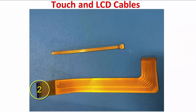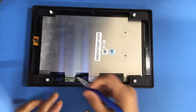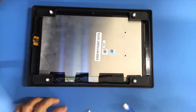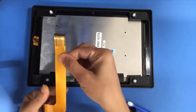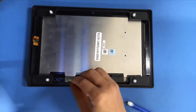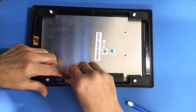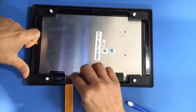Next, connect the LCD cable end shown to the LCD panel. Find the LCD connector on the LCD panel as shown here. Lift up the white flap of the LCD connector on the LCD panel. Insert the LCD cable into the black side of the connector as shown. Be sure that the cable contact is facing down towards the LCD panel. Once the cable is fully inserted, push the white flap down to secure the connection.